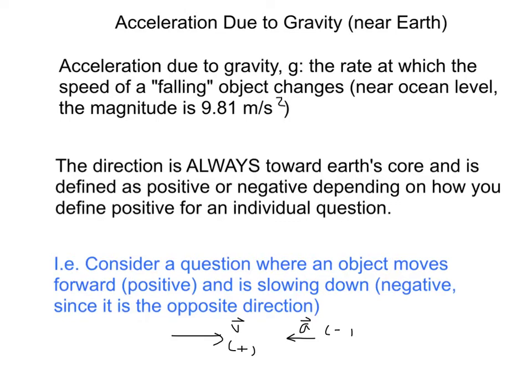So this could happen, too, with our gravity, right? If an object, let's say an object is falling, but you defined up to be positive, well, then g will actually be negative 9.81 meters per second squared. So it all depends on your positive convention, which direction you choose to be positive.